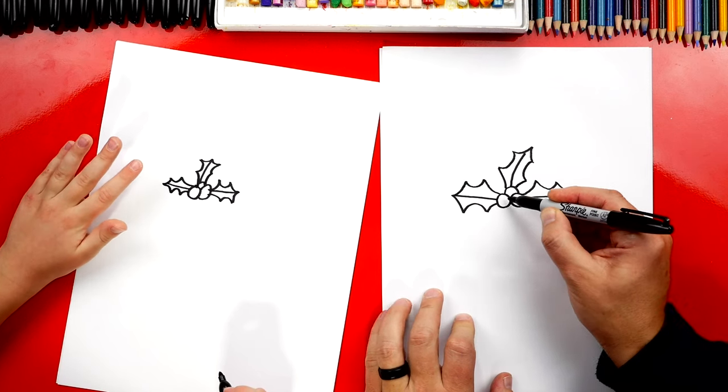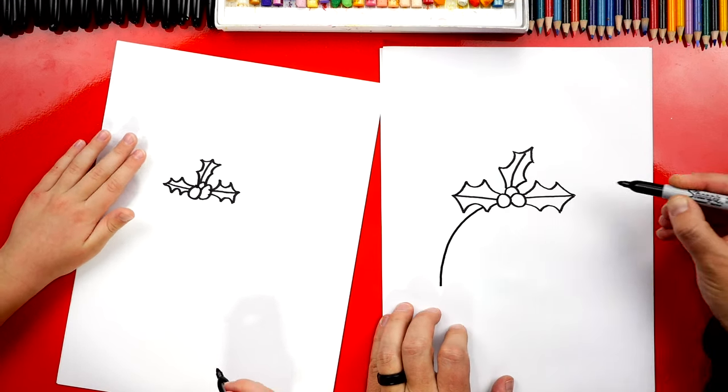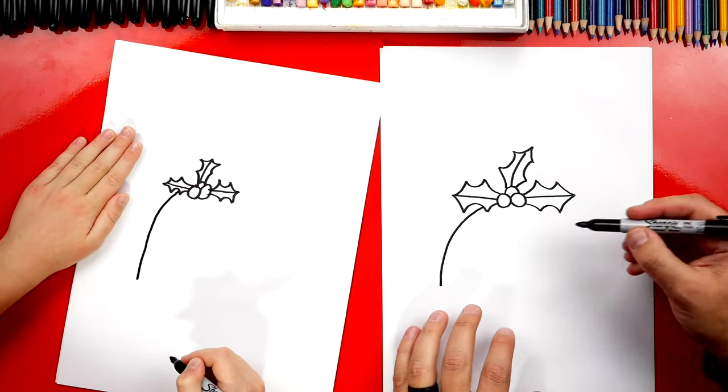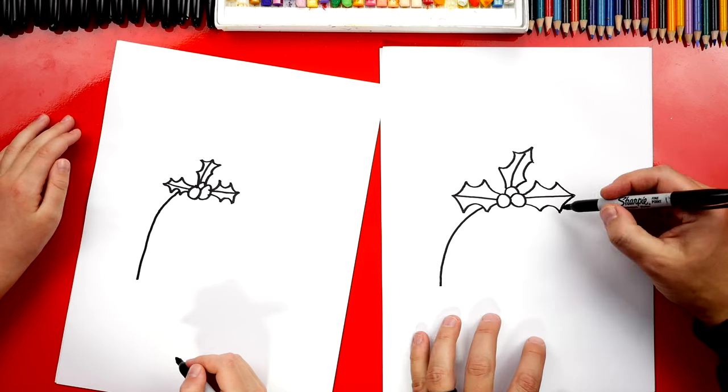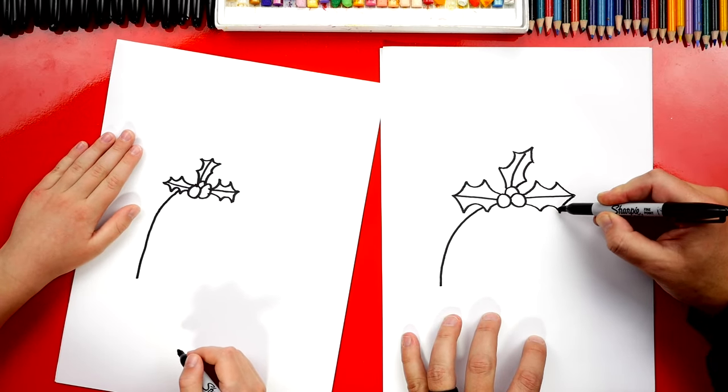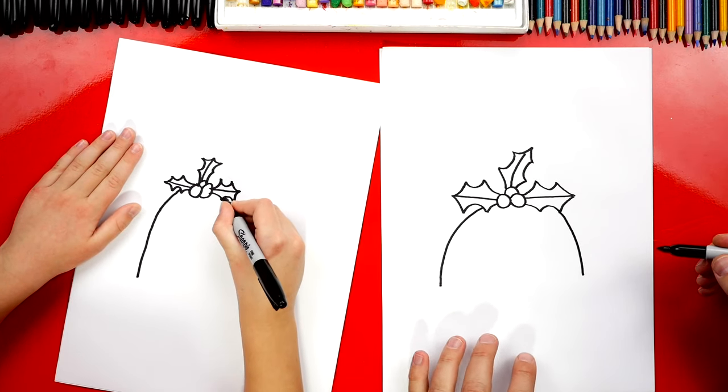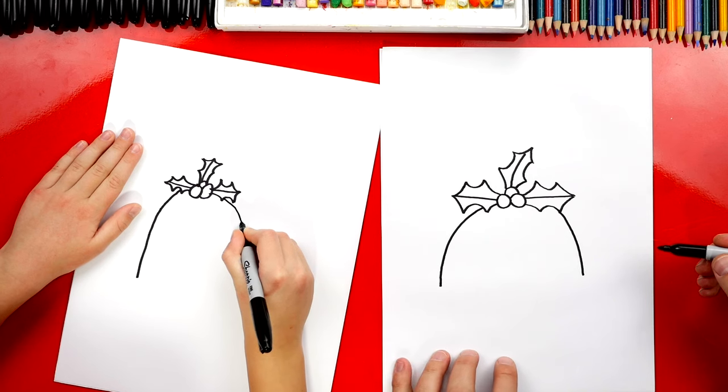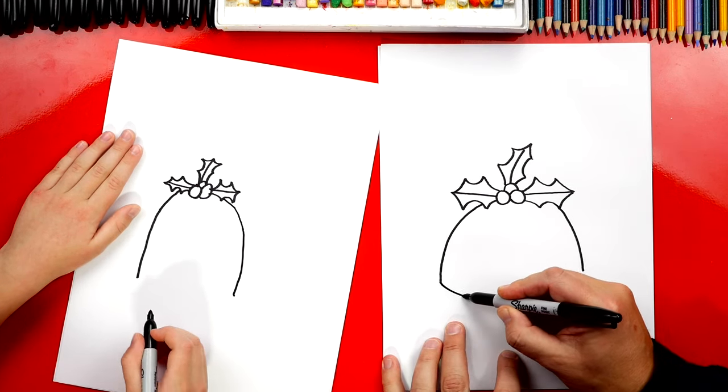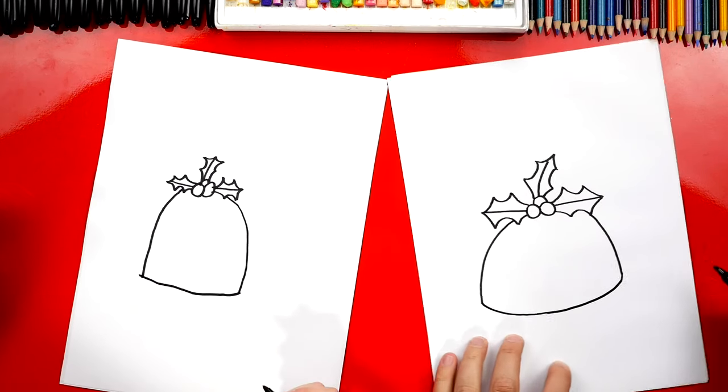We're gonna draw a curved line. We're gonna come out of the leaf right here and we're gonna curve down. Now we're using overlapping since the holly is on top of our pudding. Now we're gonna draw another curve. I'm gonna imagine this going behind and coming out on the other side. I like how tall your pudding is gonna be. Figgy pudding. Now down at the bottom we're gonna curve to connect these two lines to make it look 3D. It's gonna be on the ground.